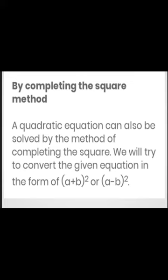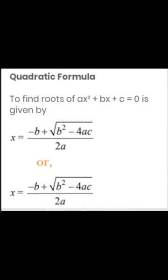By completing the square method: the roots of ax² + bx + c = 0 is given by x = (-b ± √(b² - 4ac))/2a.